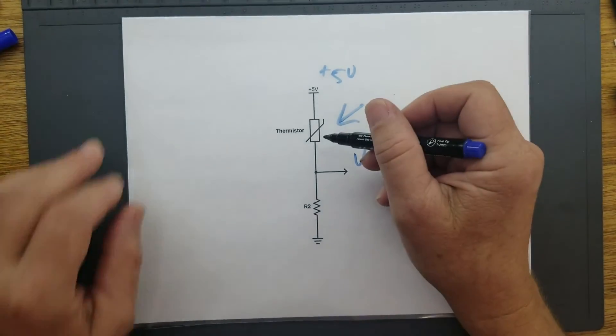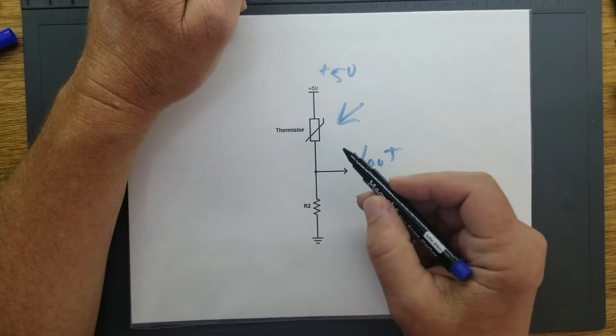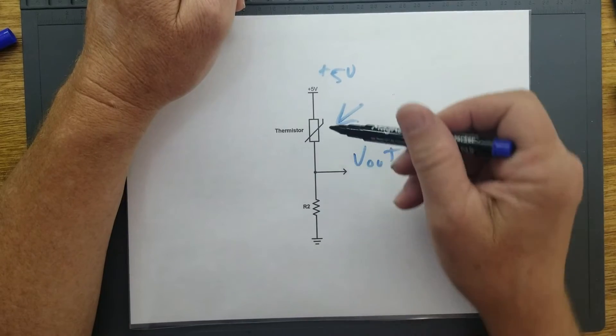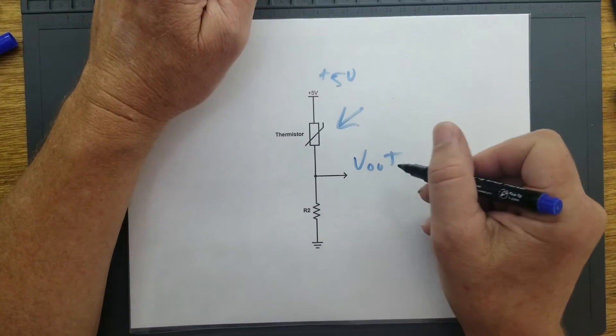As the thermistor resistance increases, which in the case of the oven sensor would be an increase in temperature, as this increases, this becomes a larger share of this voltage divider causing this voltage to go down.